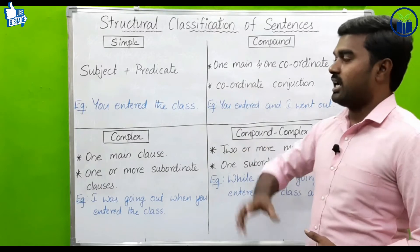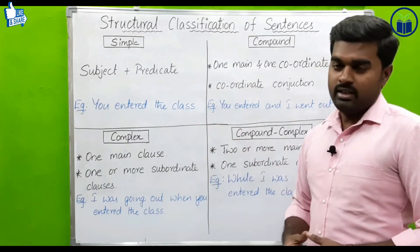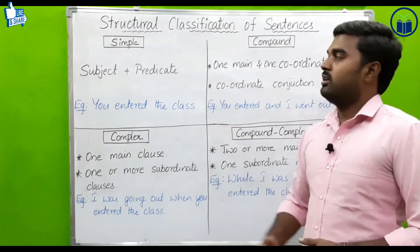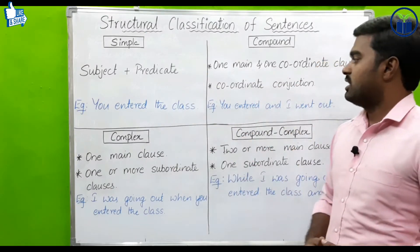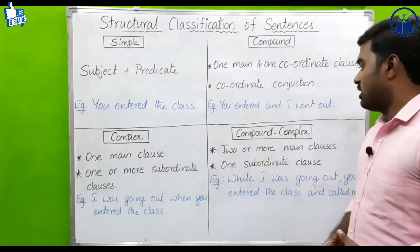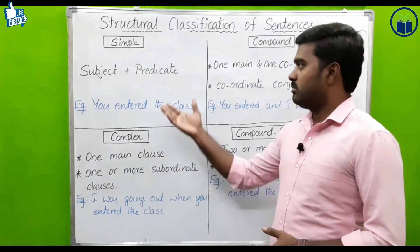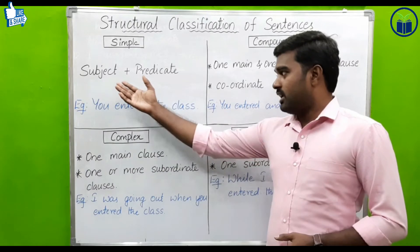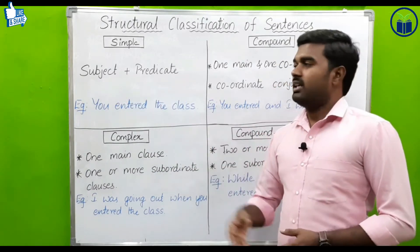So let us start our episode. First, according to structure, a sentence is classified into four categories. Based on the structure, there are four kinds: number one, simple sentence; number two, compound sentence; number three, complex sentence; number four, compound-complex. Now look at the definition of simple sentence — it contains one subject and one predicate.